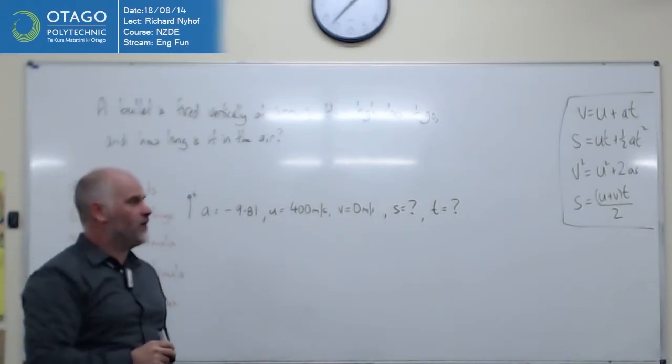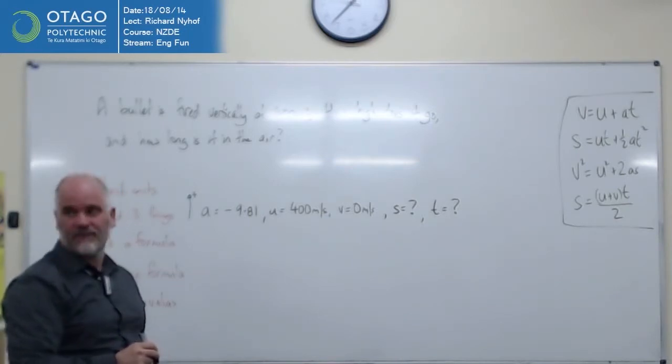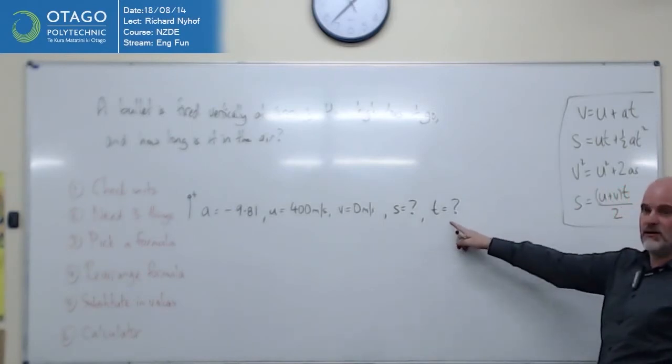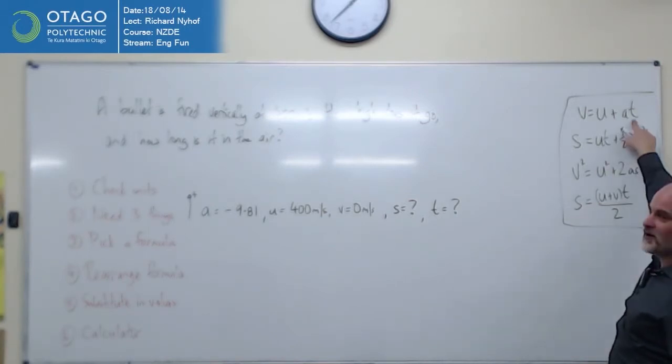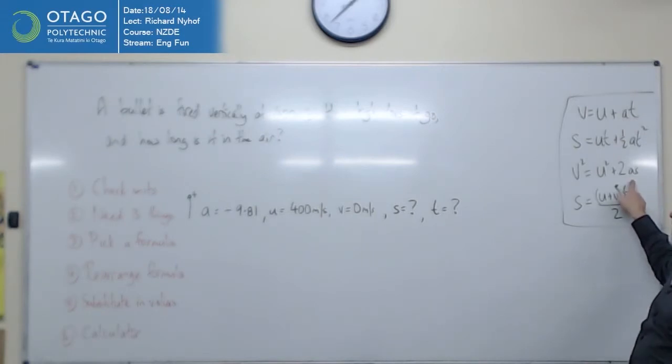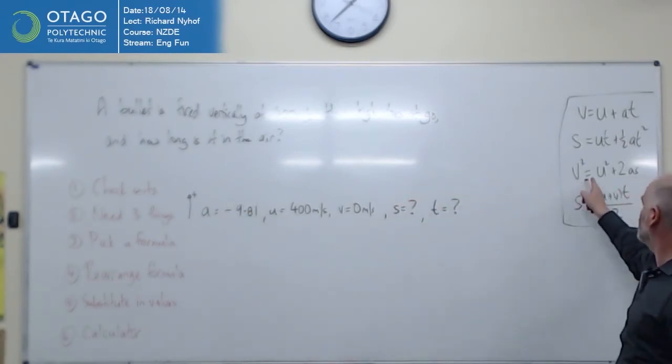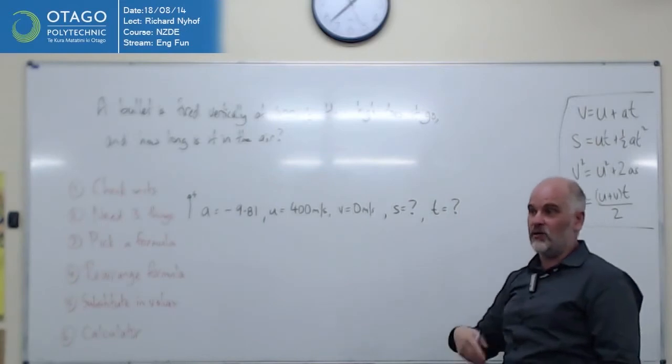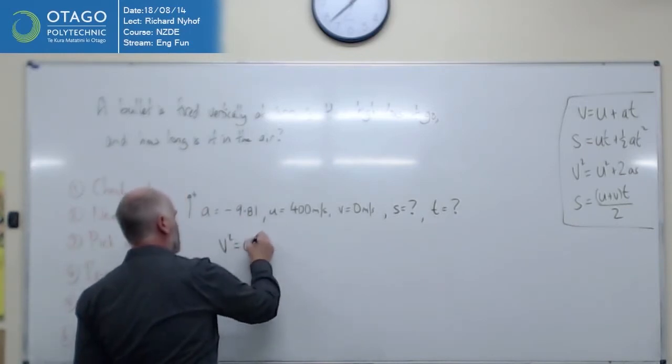So which formula do you want to use for the first bit to find the distance? But we don't know what T is. Trying to use that one without T is going to be a bit tricky. That's still got a T in it. The third one at least hasn't got a T in it. The third one's got V's, U's, and A's. So we've got the numbers for the third one. So this has to be the third one. All the others have got T in them. In this case, we don't know T. We're not trying to find T yet. So we have to use the third one. So we're going to go with V squared equals U squared plus 2AS.